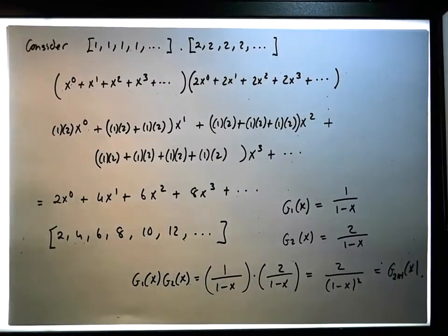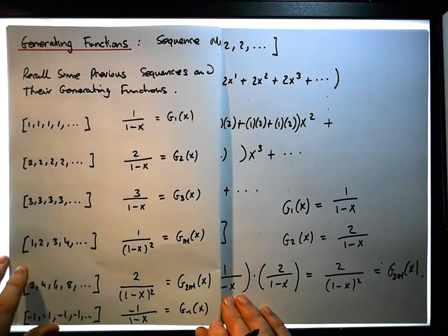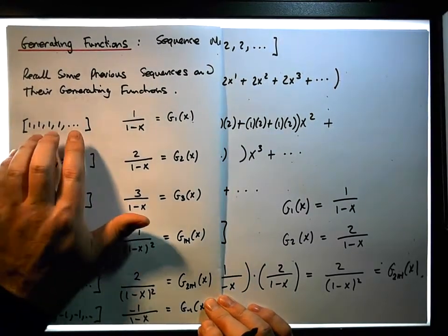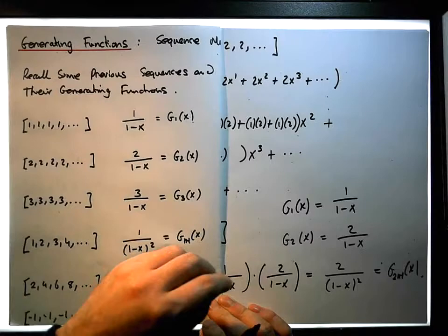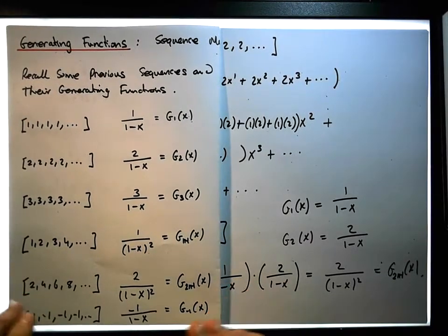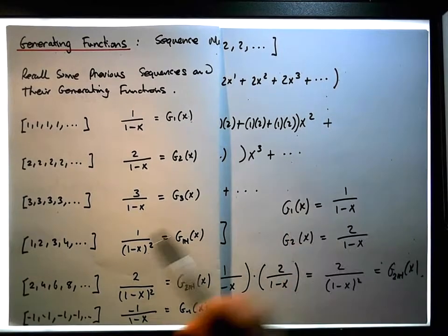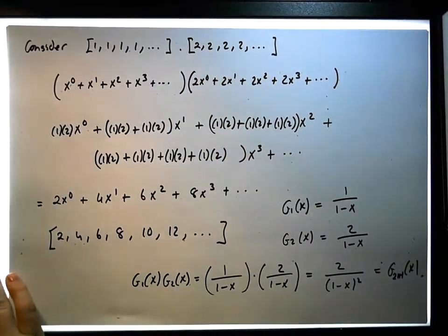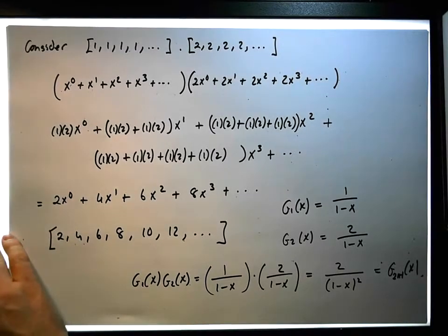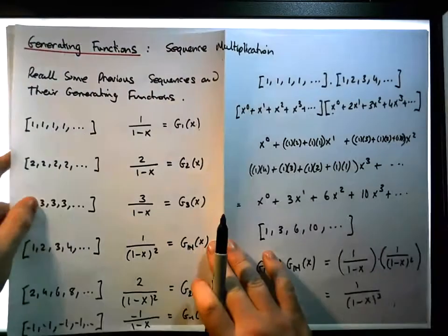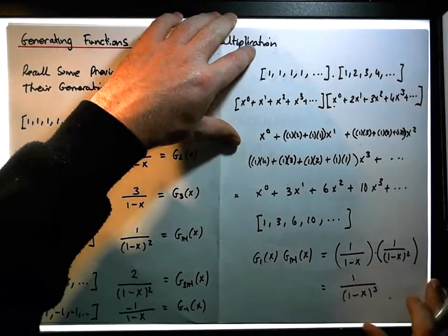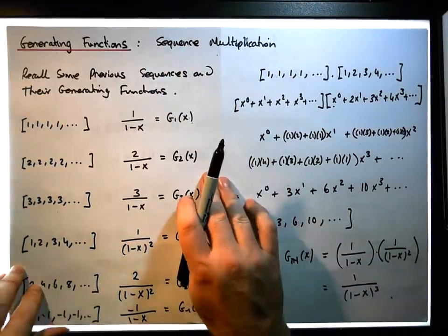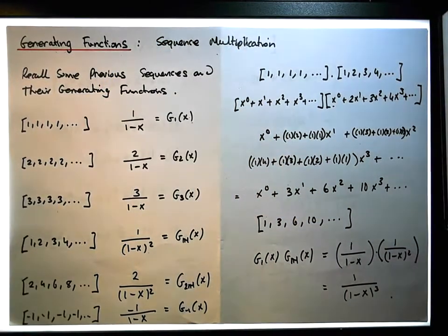The key point from this video is that when we multiply any sequence by the constant sequence of 1s, the effect is to produce a sequence that represents the running summation of the terms in the original sequence. This is Jonathan Lambert with Maths and Stats — I hope this video on generating functions and sequence multiplication was intuitive and helpful. Thanks for watching.